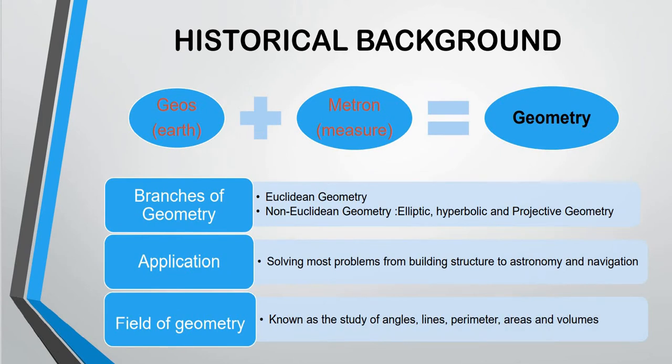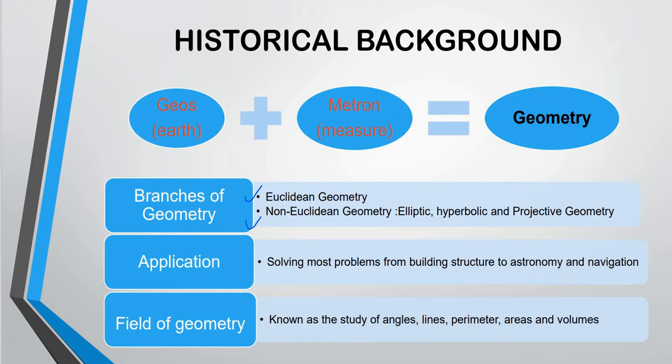As for historical background, Geometry is actually Geo, Earth, plus with Metron measure. So that is how Geometry got the name. Branches of Geometry can be divided into two. The first one is Euclidean Geometry, and non-Euclidean Geometry, which consists of elliptic, hyperbolic, and projective geometry.